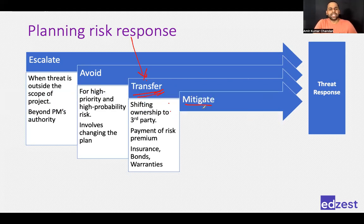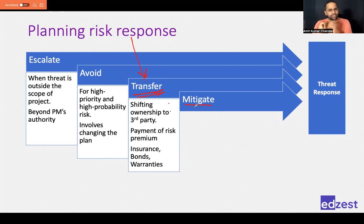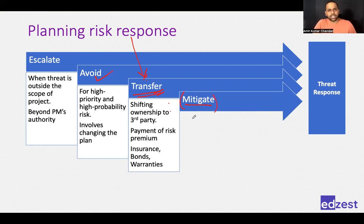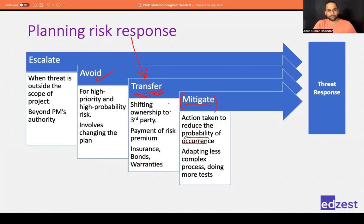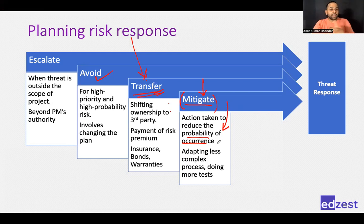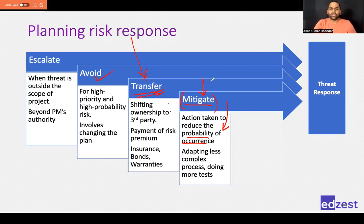The fourth response is mitigate. We commonly use this word in project life for any response, but mitigate specifically means reducing the probability that a risk will occur. When you improve packing, train team members, do extra testing, or add extra resources, you are reducing the chance that the risk will happen — not eliminating it completely. In any project, you cannot eliminate all risk, so all those actions reduce the probability of occurrence. That is called mitigate.